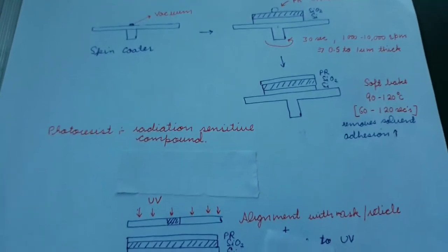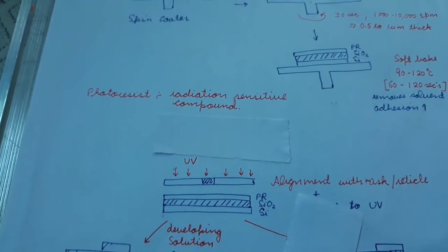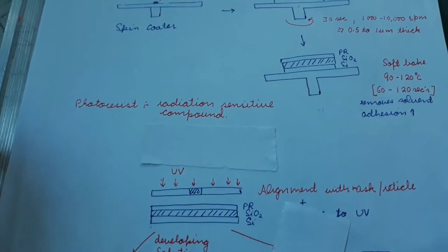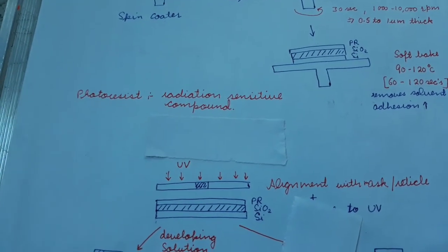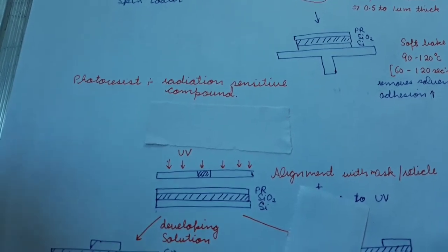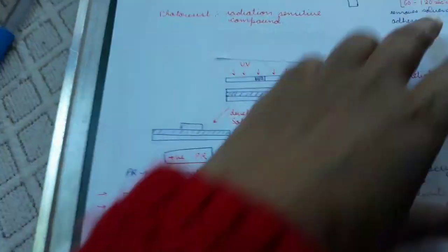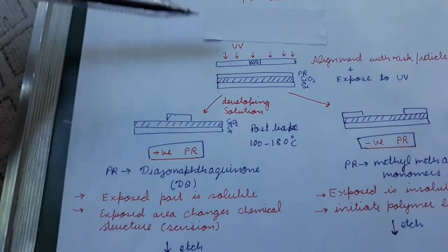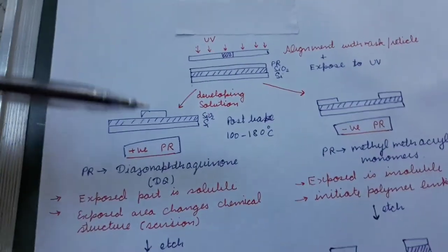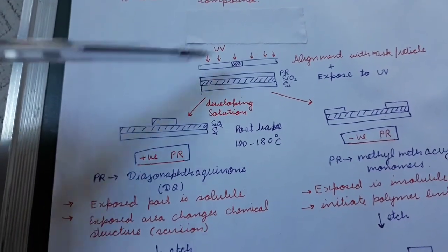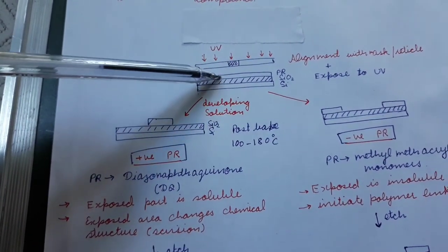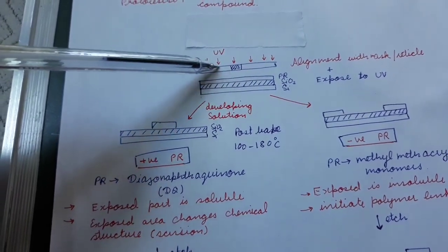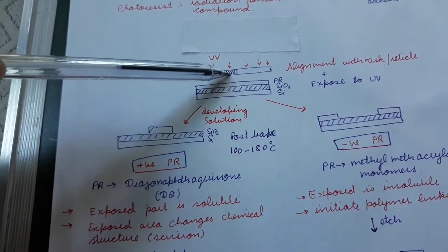The spinning takes place for around 30 seconds, depositing about 0.5 to 1 micrometer thick layer of photoresist. After this it is baked at around 90 to 120 degrees centigrade for some time to remove the solvent and increase the adhesion of the photoresist to SiO₂. A reticle with a particular pattern is placed over the photoresist, and it is then illuminated with ultraviolet radiation — some part of the photoresist gets exposed to light and some remains unexposed under the opaque regions.